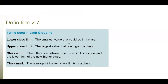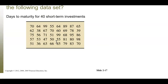When doing limit grouping, you organize data into classes. Each class has a lower class limit — the smallest value that can go into it — and an upper class limit — the largest value that can go into it. There's also a class width and a class mark, which is the average of the two class limits. You have some leeway in setting up your classes, but make it sensible. For this data, the absolute lowest value appears to be in the 30s and the highest in the 90s.